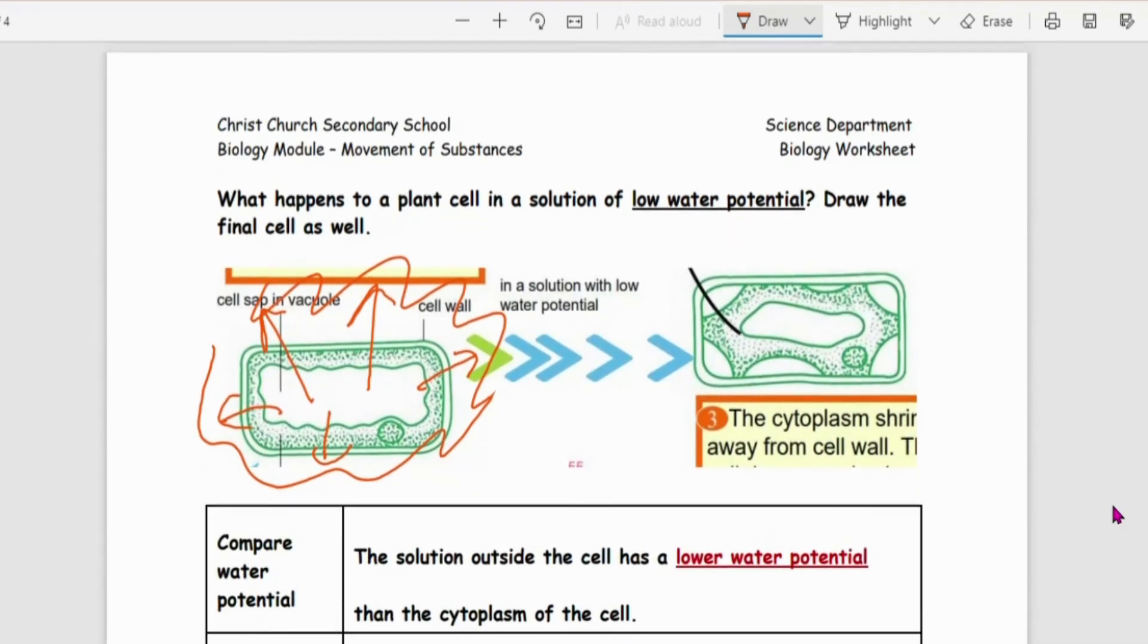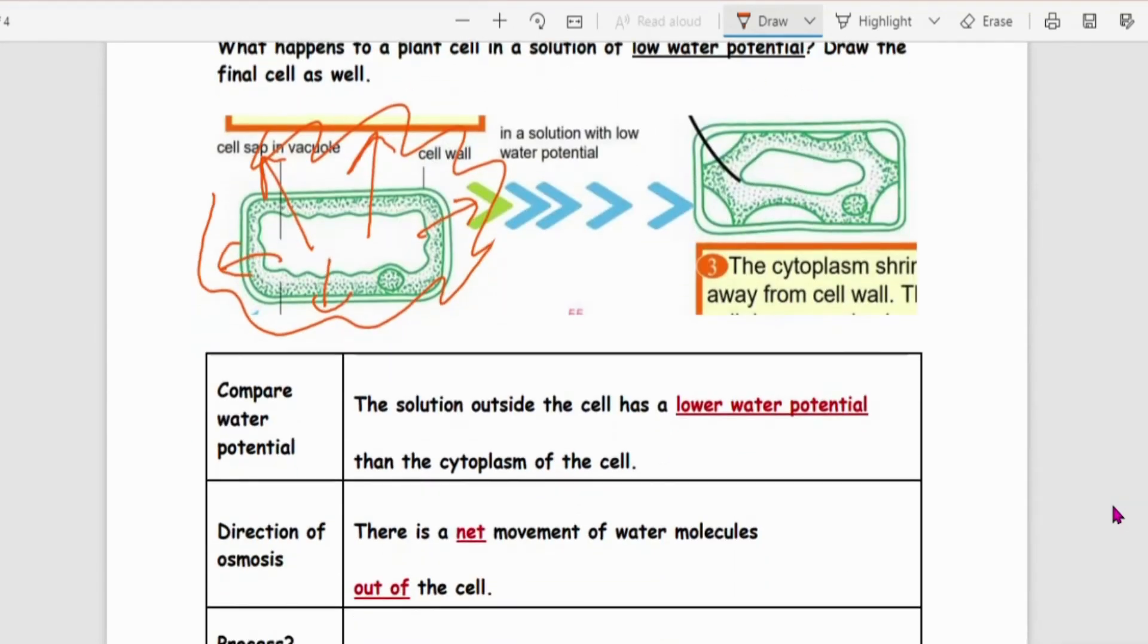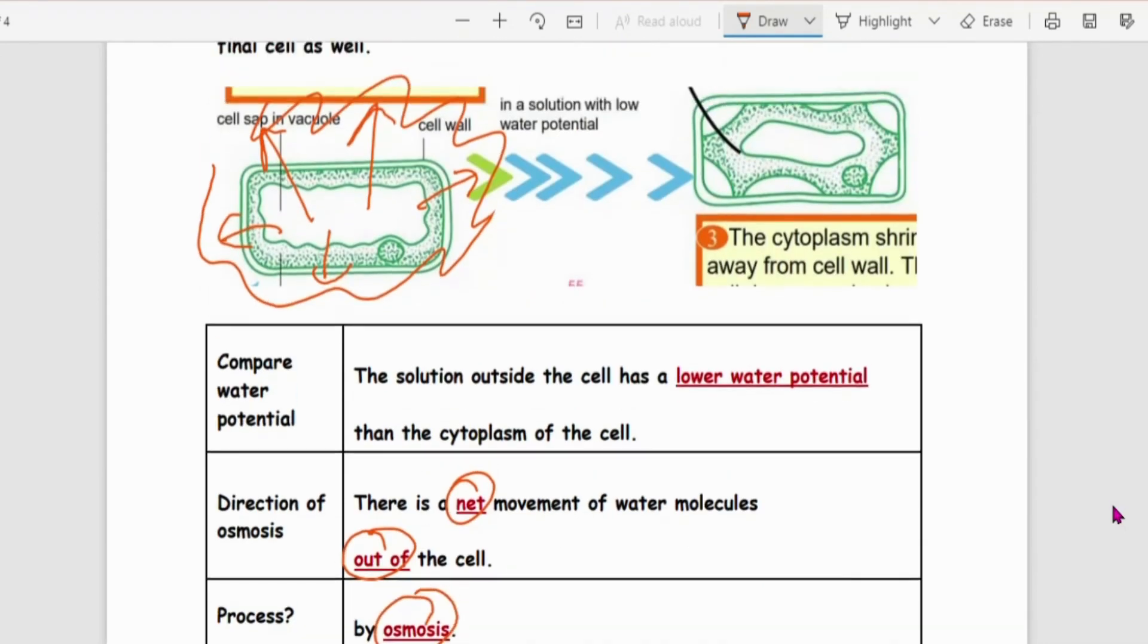So if the water moves out, what's going to happen? Outside lower water potential. There's a net movement out of the cell. This is via osmosis. So you'll see that it looks something like this. Now describing this cell, once you see this.